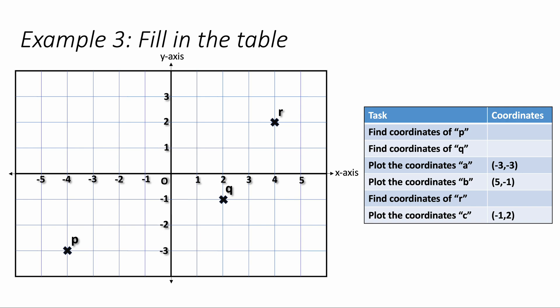Now we've got a full task to do where we have to find the coordinates of P, Q and R, and also plot A, B and C. Let's start by finding the coordinates of P from the table. P is minus 4 across and minus 3 down, because it aligns with minus 4 and minus 3. We can fill in the table to say minus 4, minus 3.